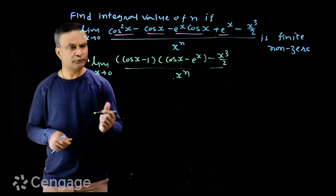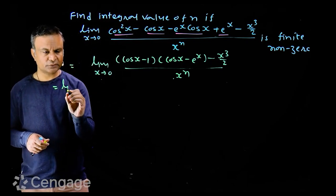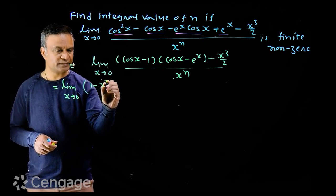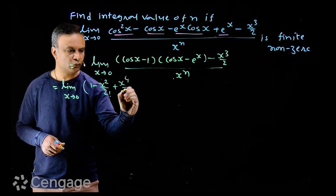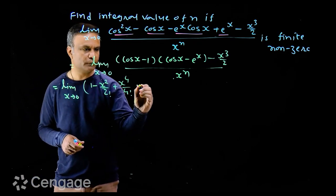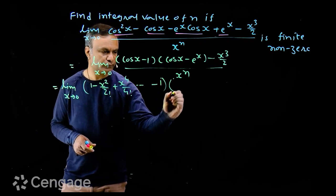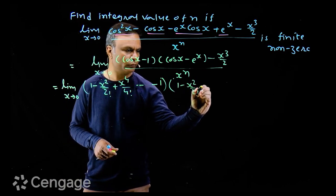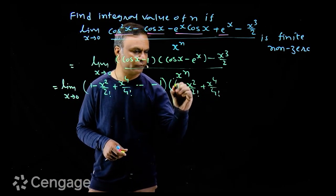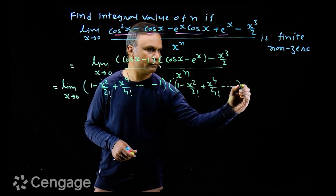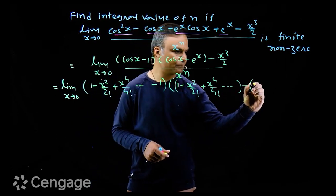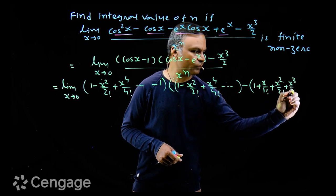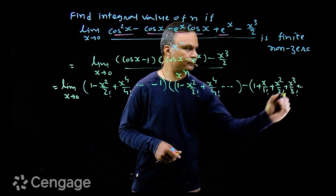Now we can use expansion formulas. So this is limit x tends to zero of expansion of cos x: 1 minus x square upon 2 factorial plus x power 4 upon 4 factorial and so on minus 1. Expansion of e power x is 1 plus x upon 1 factorial, x square upon 2 factorial plus x cube upon 3 factorial and so on.